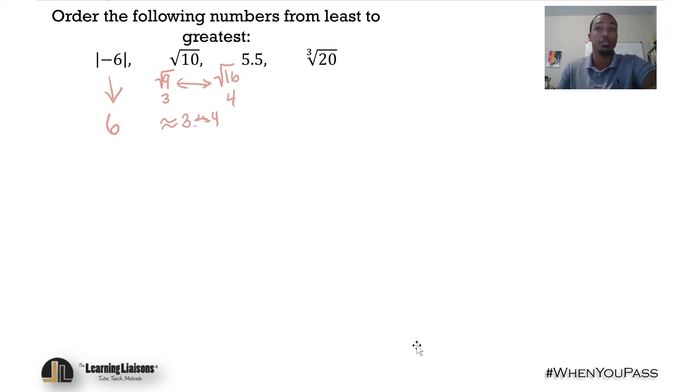5.5 - thankfully that's written out for us, that's just 5.5. And then the cube root of 20, this is probably the hardest one here. Cube root - what does that mean? Take a second to think about it. Remember it means what number multiplied by itself three times gives us that 20?